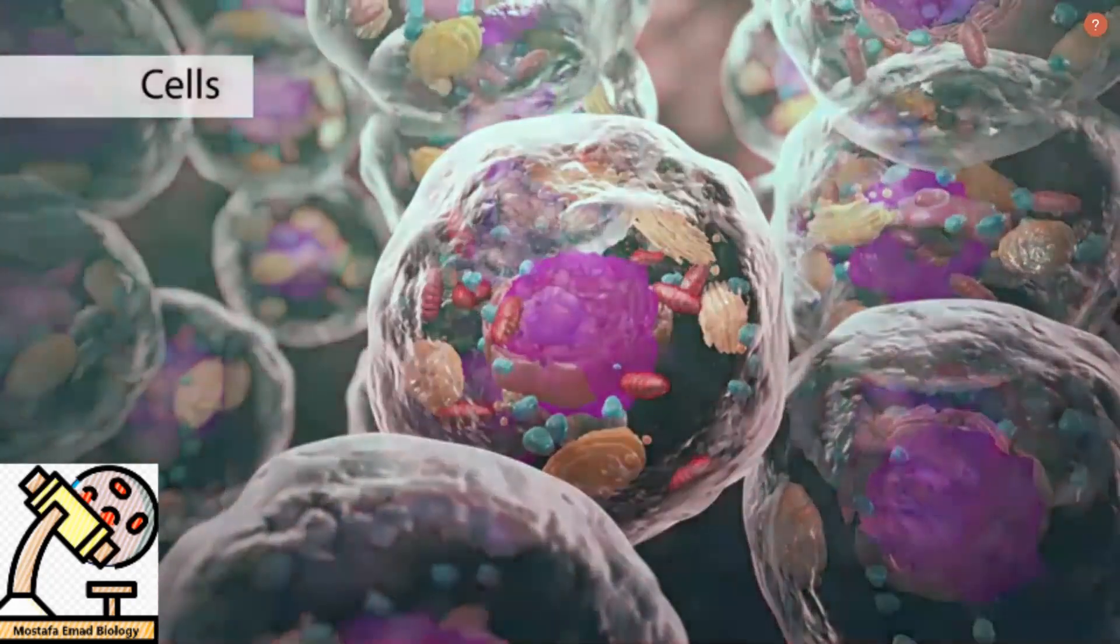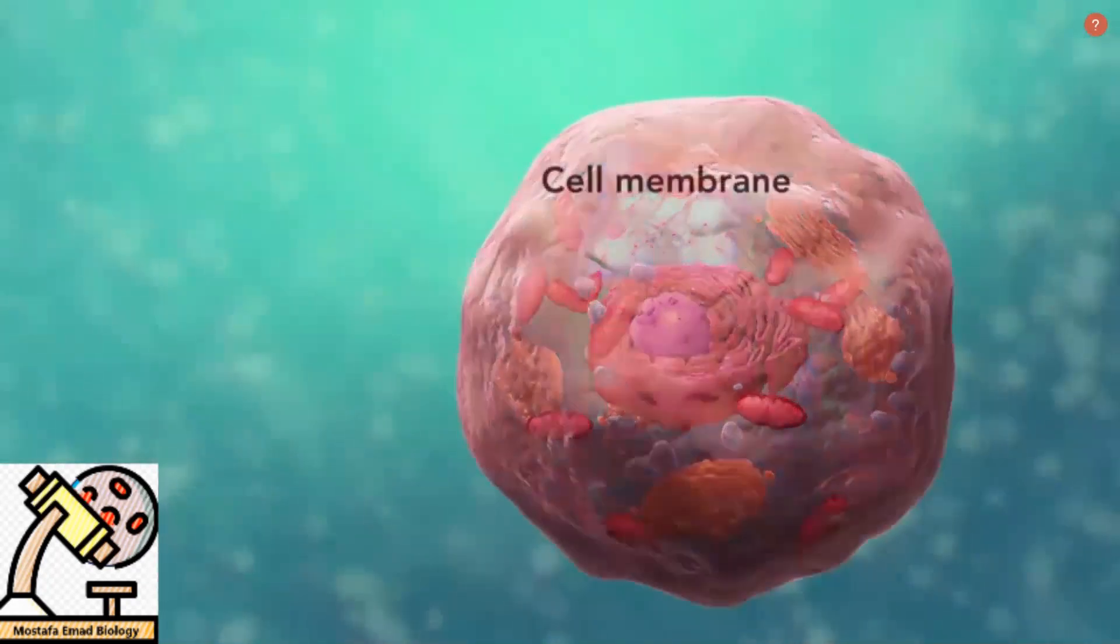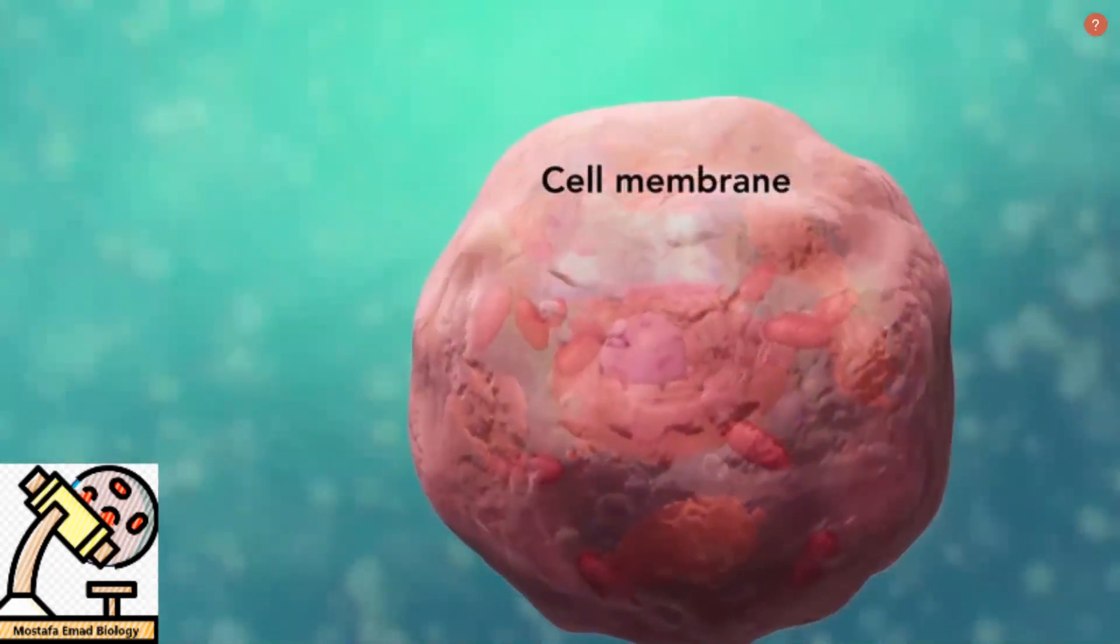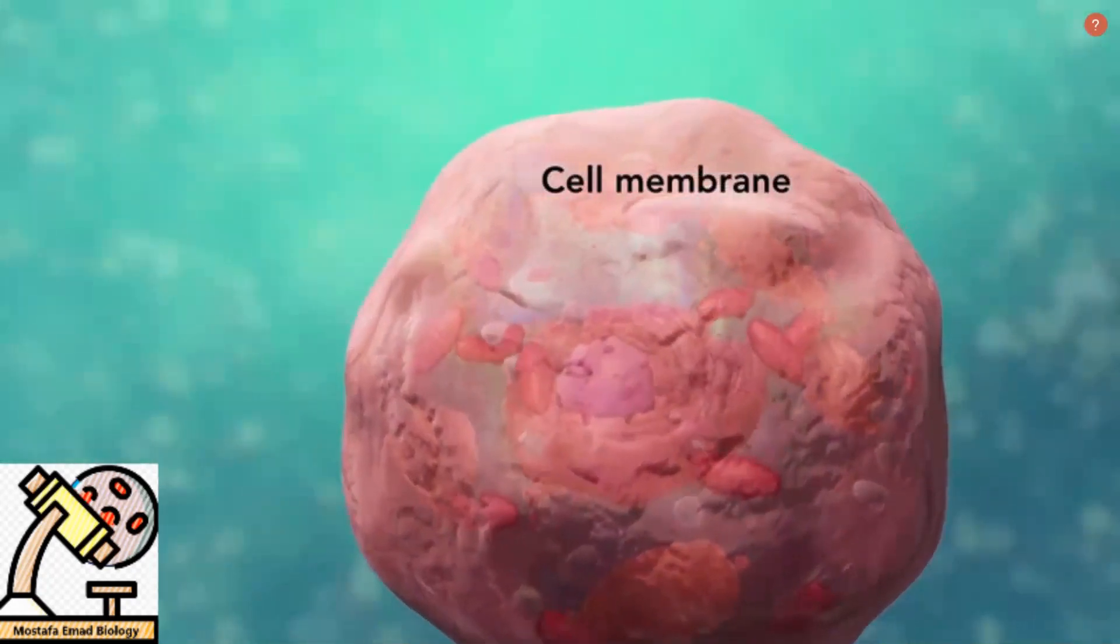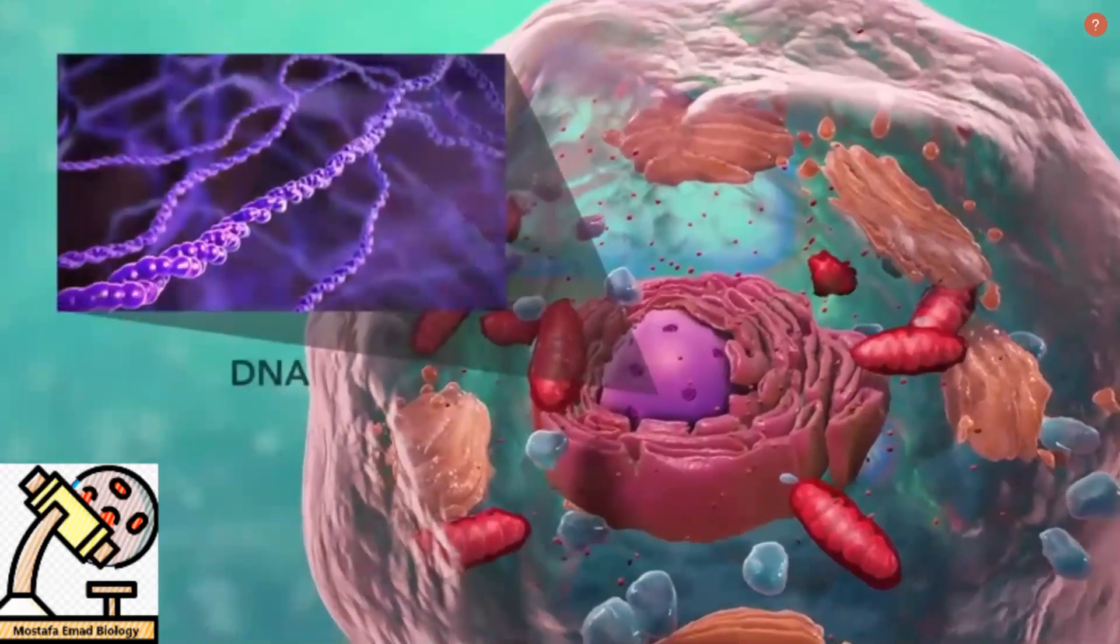All cells have three things in common, no matter what type of cell they are. All cells have a cell membrane, which separates the inside of the cell from its environment, cytoplasm, which is a jelly-like fluid, and DNA, which is the cell's genetic material.